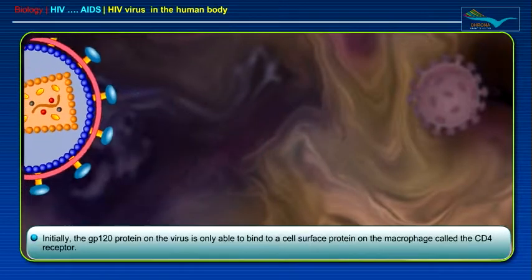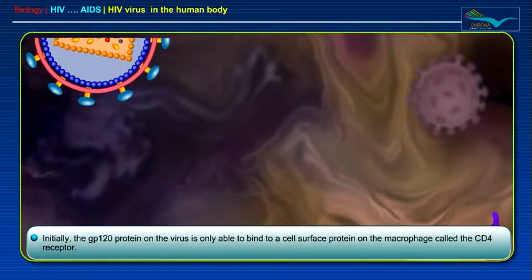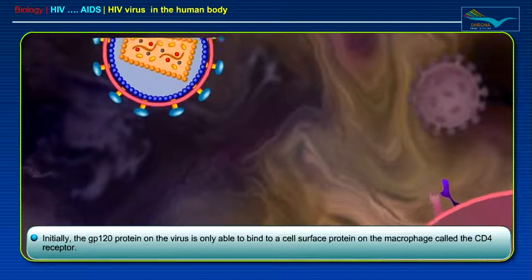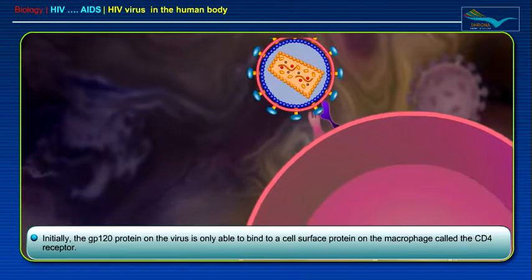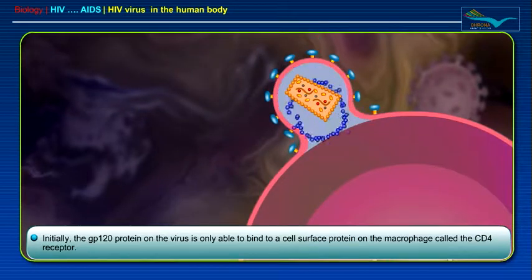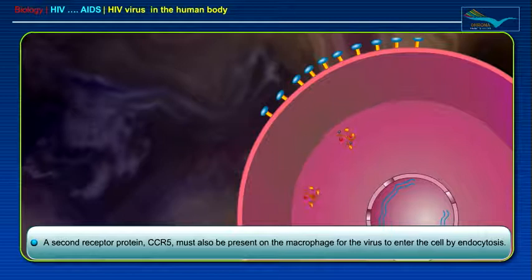Initially, the GP120 protein on the virus is only able to bind to a cell surface protein on the macrophage called the CD4 receptor. A second receptor protein, CCR5, must also be present on the macrophage for the virus to enter the cell by endocytosis.